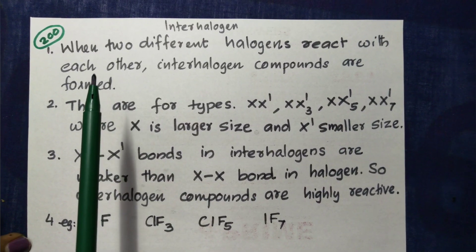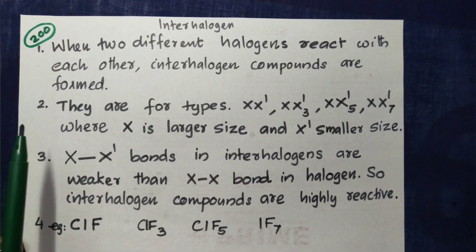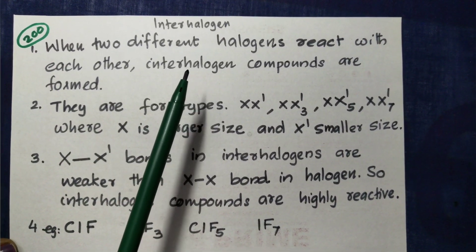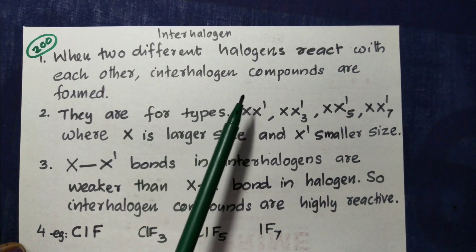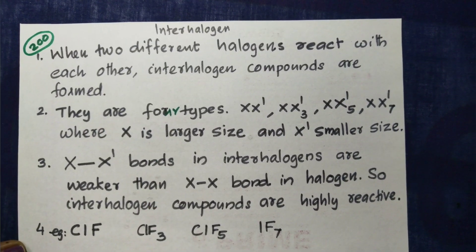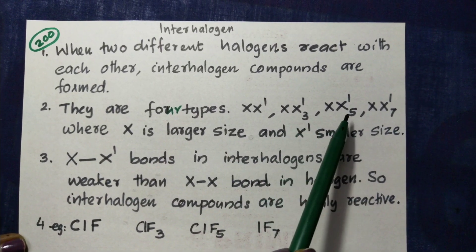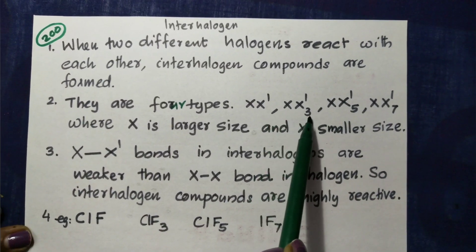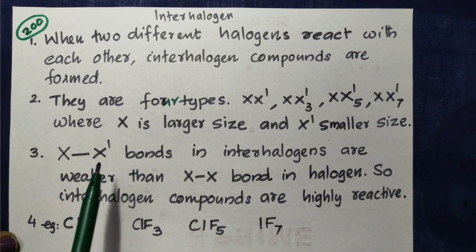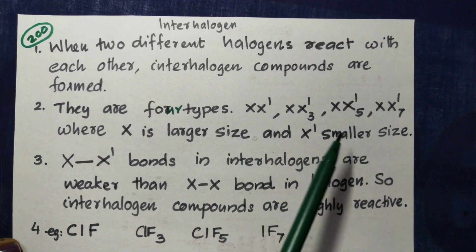When two different halogens react, interhalogens are formed. They are of four types: XX′, XX′3, XX′5, and XX′7, where X is the larger size halogen and X′ is the smaller size halogen.